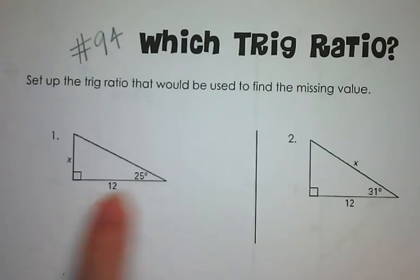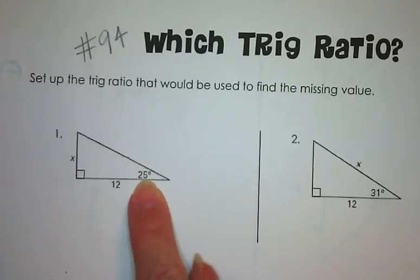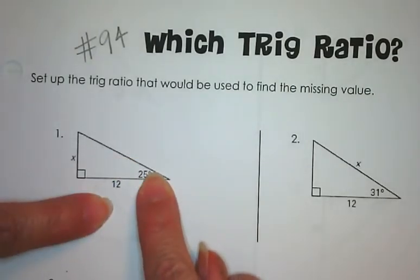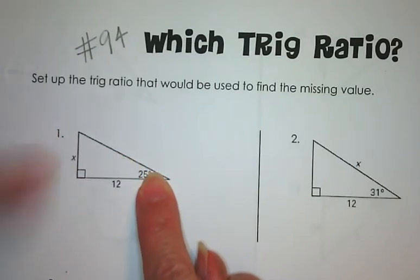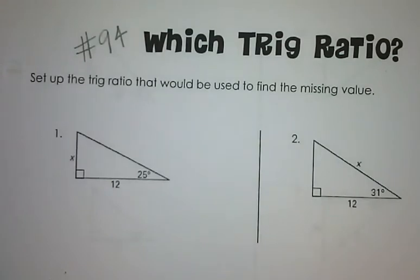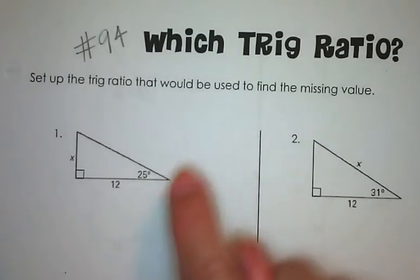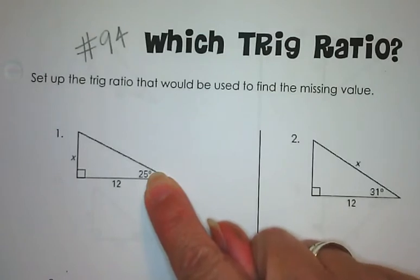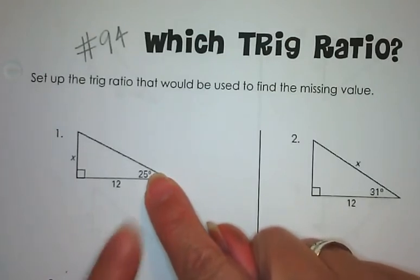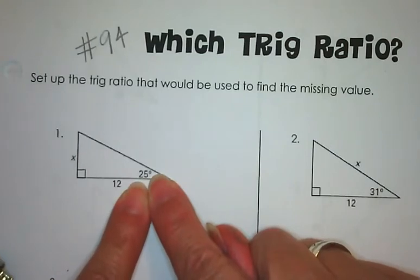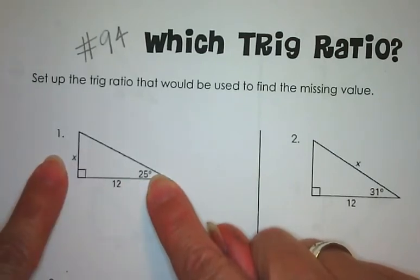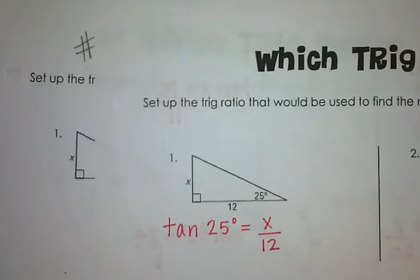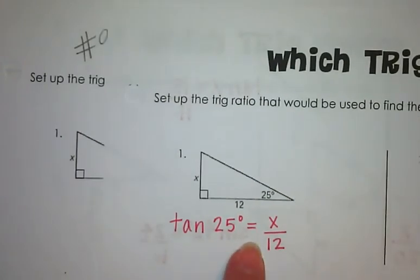Looking at this triangle, the angle we know is 25 degrees. From this angle, the adjacent side is 12 and we are looking for the opposite side. The trig function that relates an angle to the opposite and adjacent sides is tangent. So the tangent of 25 degrees equals the opposite over the adjacent, which gives us tangent of 25 degrees equals x over 12.